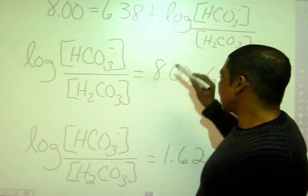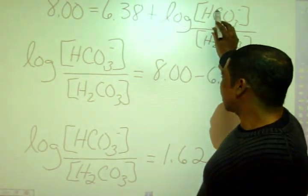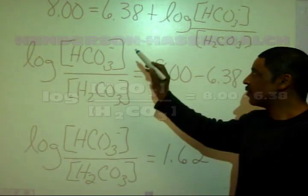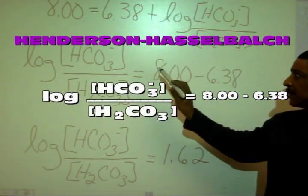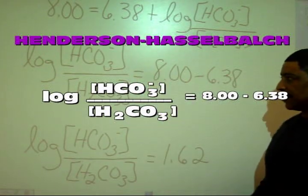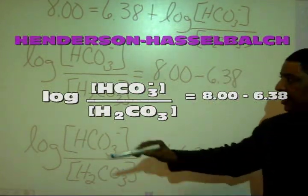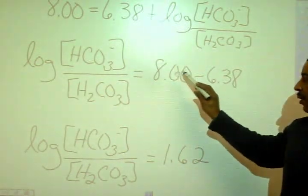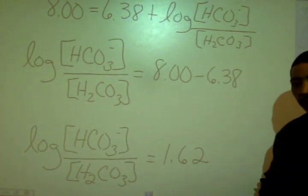At this point, we would like to isolate our log anion over acid. Therefore, we subtract 6.38 from both sides of the equation. That gives me log anion over acid is equal to 8.0 minus 6.38.